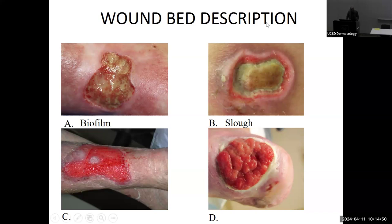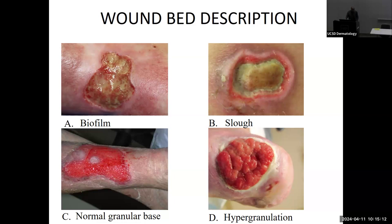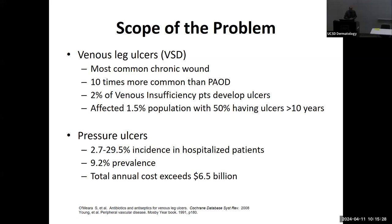A healthy granular bed is the type of wound you want in your mind — the goal you're trying to achieve with any open defect. Then there's hypergranulation, where granulation tissue has gone above and beyond. Sometimes I'll take some hypergranulation from one area and place it where there's a deficit — certain techniques we use to get to the next stage.